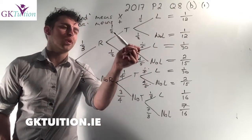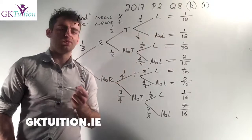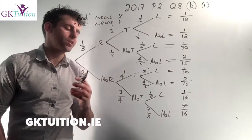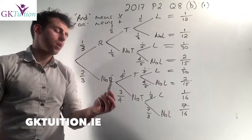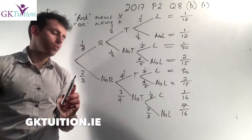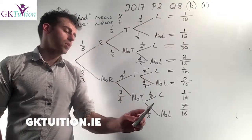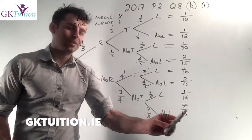So one third multiplied by a half, multiplied by a half gives me one twelfth. Basically you just go along your eight different branches and in each case you multiply them along. So for example the last one here would be two thirds multiplied by three quarters multiplied by seven eighths which gives me seven over sixteen.